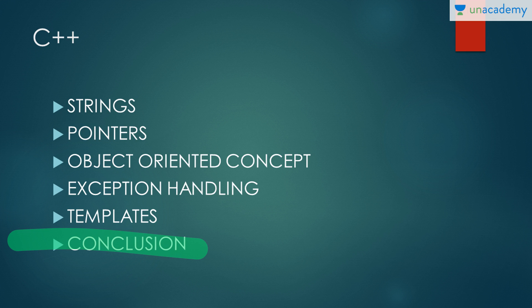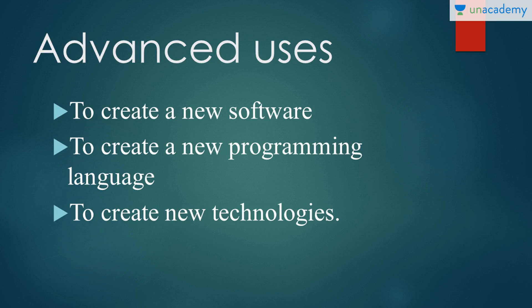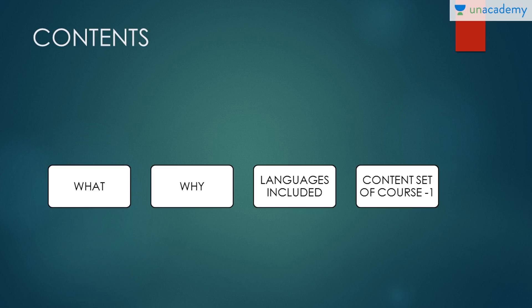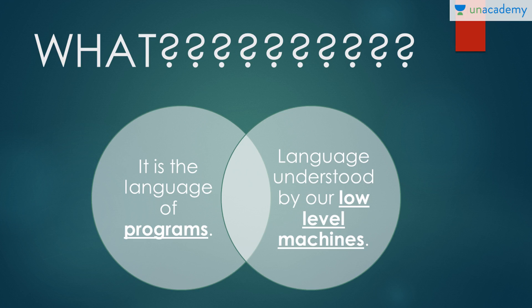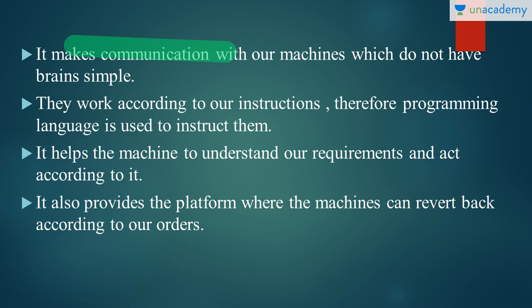So revising what we have learnt today: apart from this content, as this was only an overview, we have learnt some advanced uses of programming language along with what is programming language. Don't forget: programming language is the language of programs which is understood by our low level machines, and we need it to communicate with our machines which do not have brains to urge them to work according to our instructions, helps the machine to understand our requirements and act according to it, and provide the platform where the machines can revert back according to our orders.